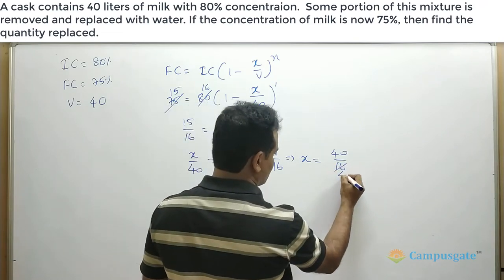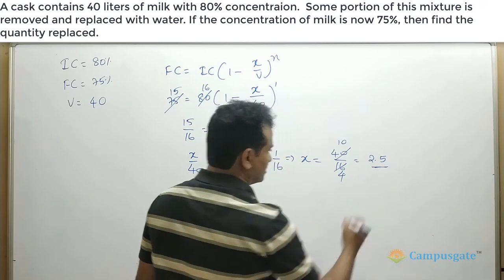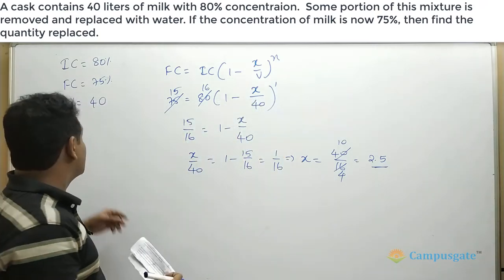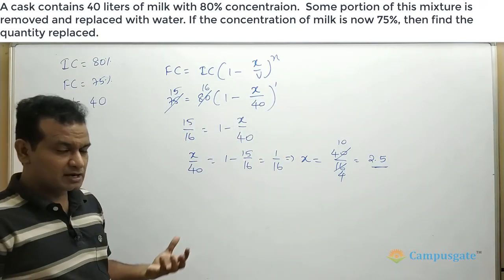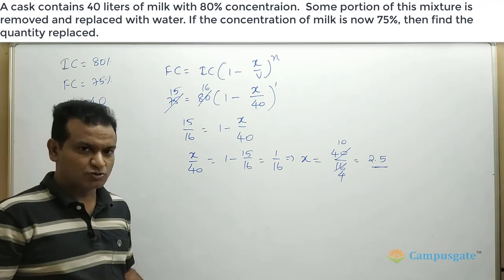So 4 goes 4 times. 4 goes 10 times which is equal to 2.5 liters. So initially we have removed 2.5 liters out of this beaker and replaced with water. Therefore that's why we got x equal to 2.5.